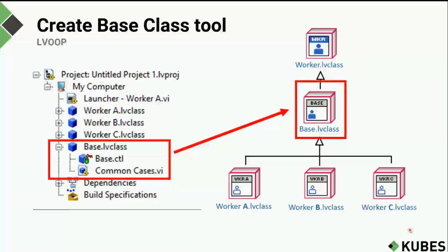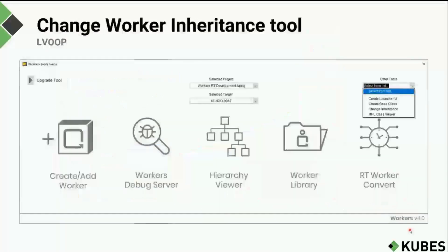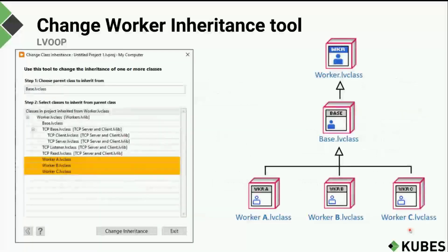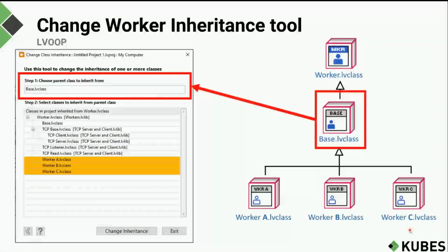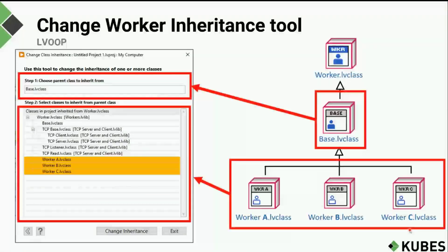The next step is to inherit your workers from this base class, which is where the Change Worker Inheritance Tool comes in handy — also available from the Other Tools dropdown. This tool allows you to select the base class you want to inherit your workers from, then batch-select the workers you want to inherit from that base class, making it much easier to organize and reorganize your worker inheritance hierarchy in your projects.